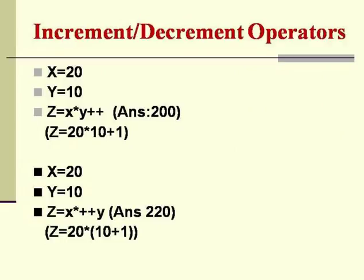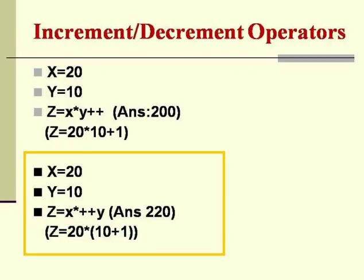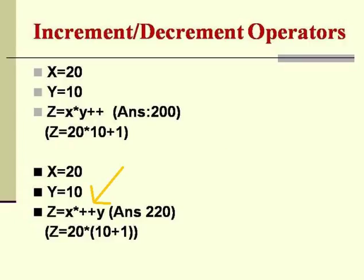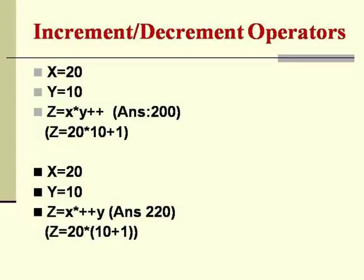Looking at the next set of statements, x is equal to 20 and y is equal to 10. But here we have x multiplied by ++y. Because the increment operator comes before the variable y, it is called a pre-increment operator. Here, the increment operation is done before the multiplication itself, so the actual operation performed is 20 * (10 + 1), and the actual value becomes 220.